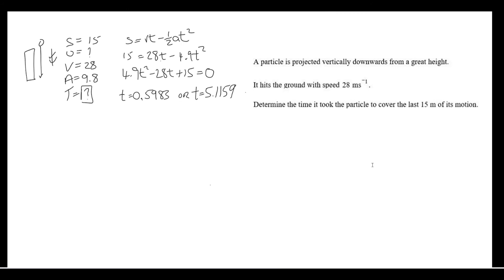If the initial velocity was upwards, the journey would take longer to have a displacement of 15 meters. Whereas, if it was downwards, which is what we're considering here, it would take less time to have a displacement of 15 meters. So, we're going to choose this shorter time 0.5983.